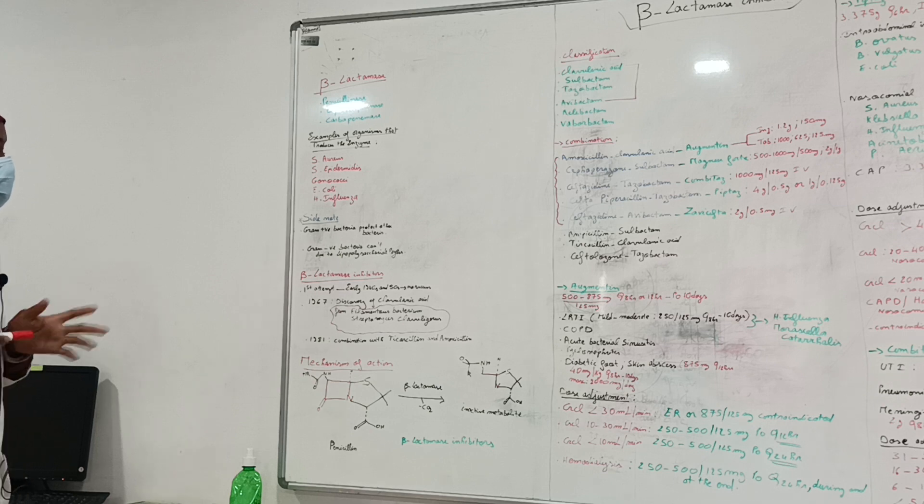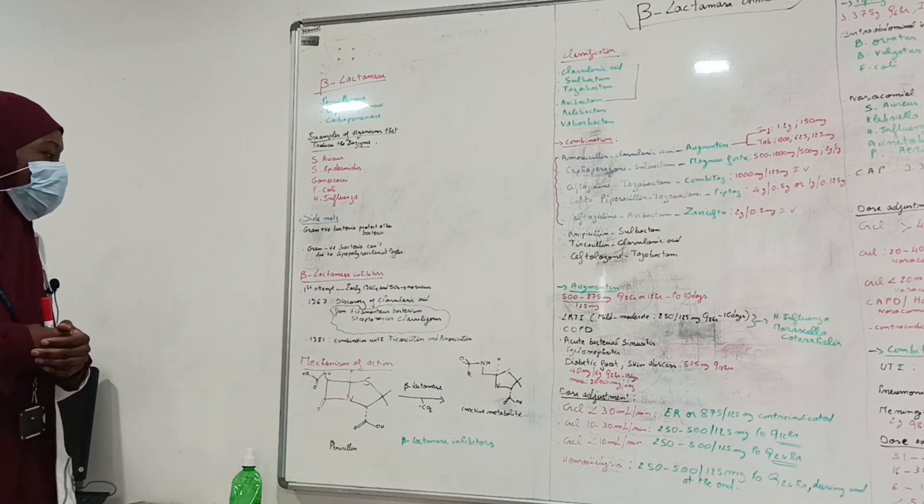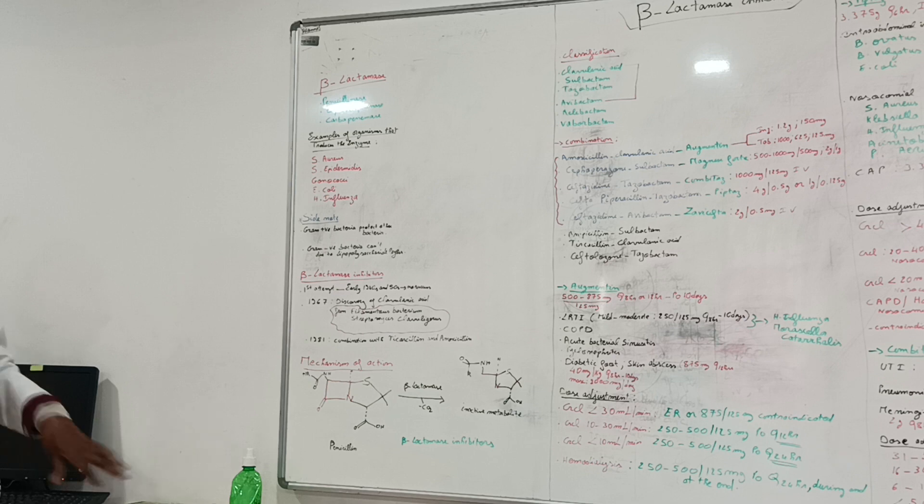Now let's see about the beta-lactamase inhibitors themselves. A brief history: The first attempt to find inhibitors against beta-lactamase enzymes was done in early 40s and 50s, but it was a failure. Then in 1967, through microorganism screenings, they discovered clavulanic acid from a filamentous bacterium Streptomyces clavuligerus.